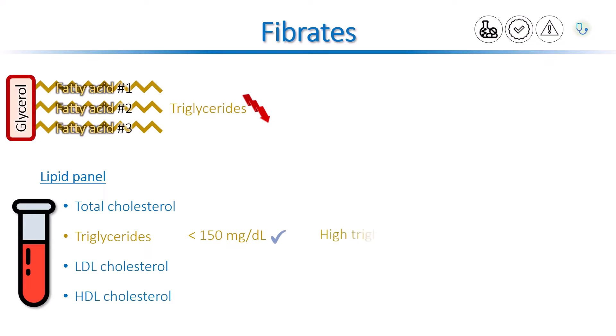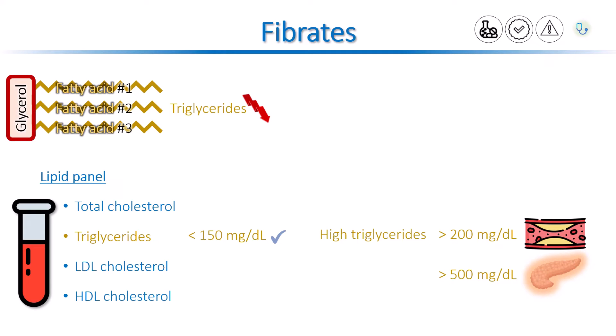A high level of triglyceride is atherogenic, which means it can cause atherosclerosis, increasing the risk of cardiovascular complications like myocardial infarction and stroke. Extremely high levels of triglycerides can also cause acute inflammation of the pancreas, or pancreatitis.